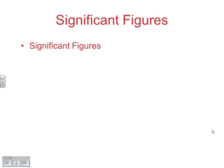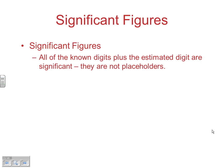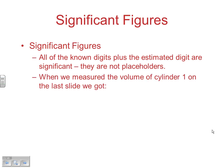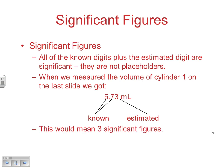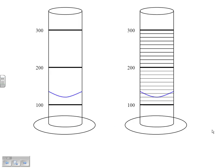Significant figures: all known digits plus the estimated digit are significant — they're not just placeholders. For the 5.73 mL reading, the 5 and 7 are known digits and the 3 is the estimated digit — all three are valid parts of the measurement, giving three significant figures. Accuracy refers to proximity of a measurement to the true value; precision refers to the proximity of several measurements to each other — precision always requires multiple measurements.